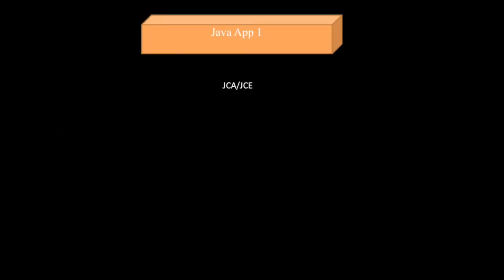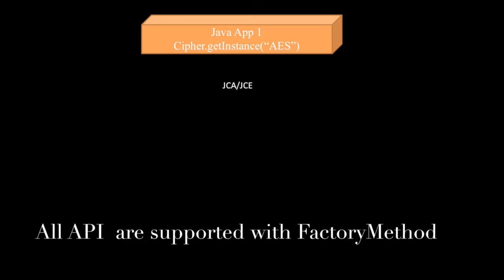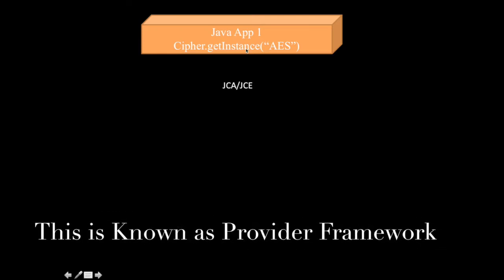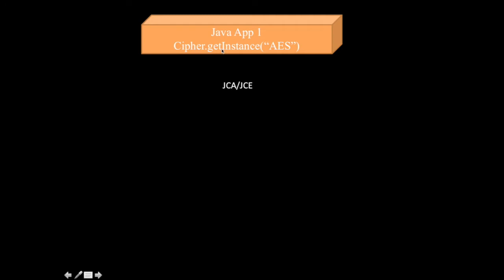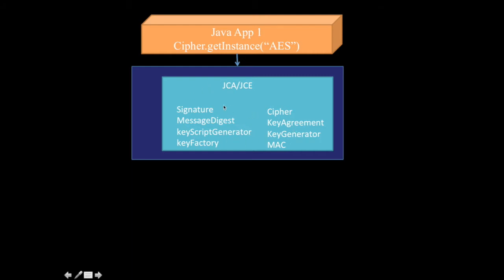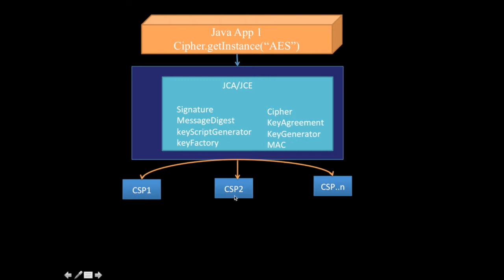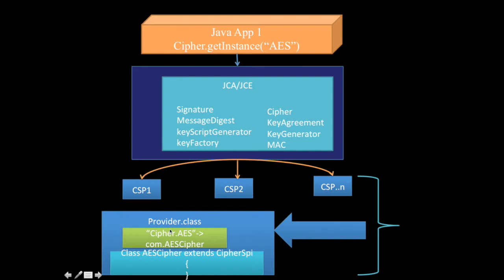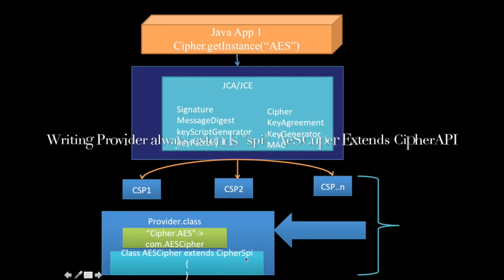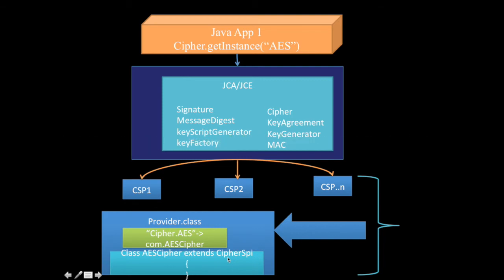In JCA, the Java application tries to get Cipher.getInstance("AES"). JCA makes use of factory methods to supply instances of its classes — you'll find Cipher.getInstance(), MessageDigest.getInstance(), KeyFactory.getInstance(). It goes to the building blocks of the engine, looks up the service provider, and gets the Cipher AES implementation via CipherSPI. All SPIs extend CipherSPI. If you want to extend SignatureSPI, you can create your own SPI by extending it.